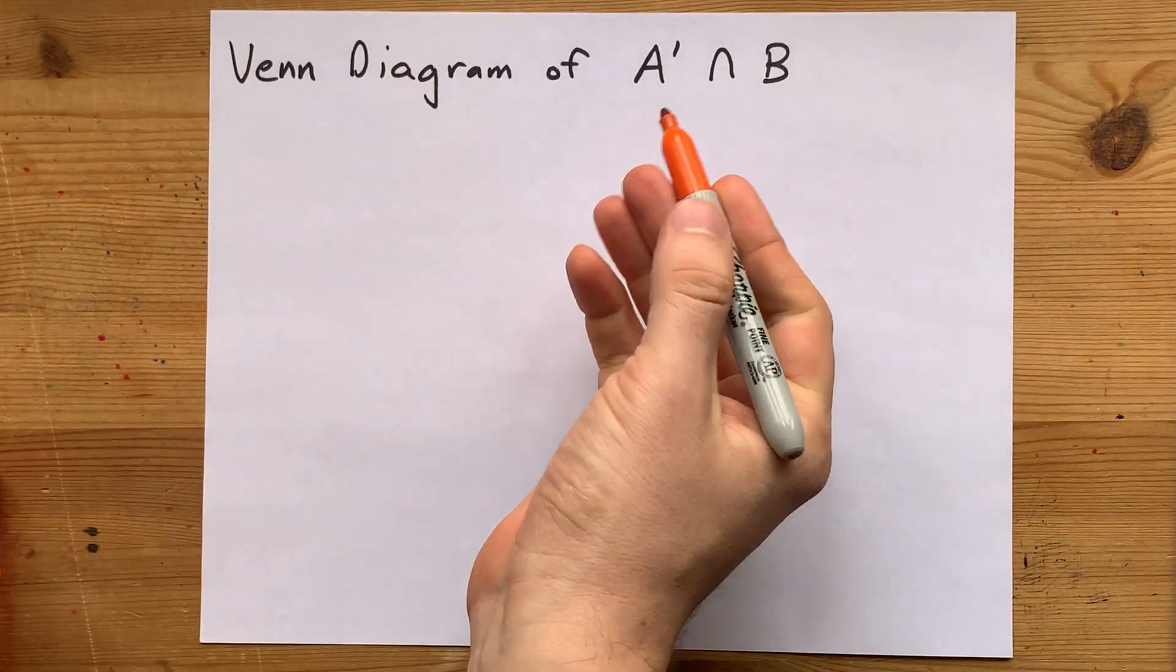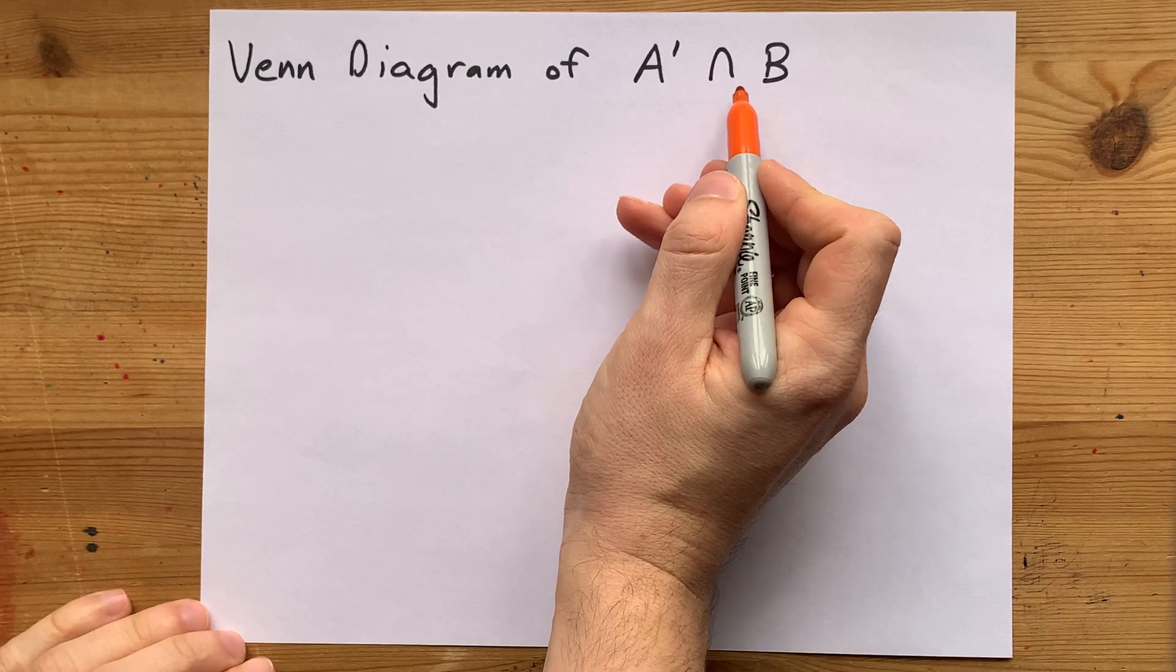Together we are going to draw the Venn diagram of A complement intersect B.